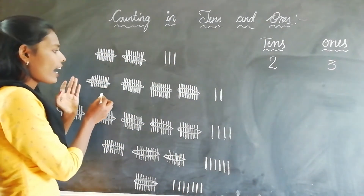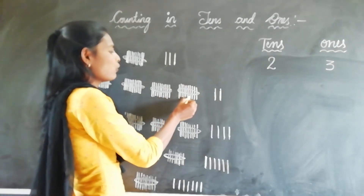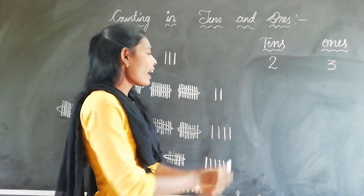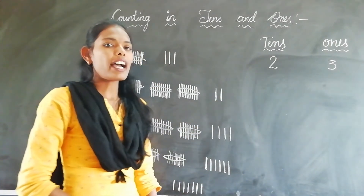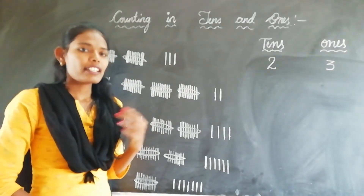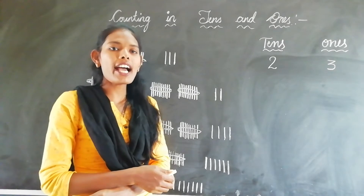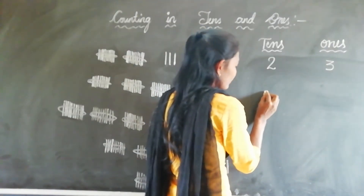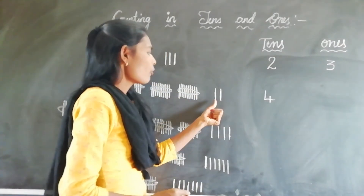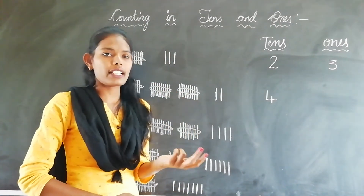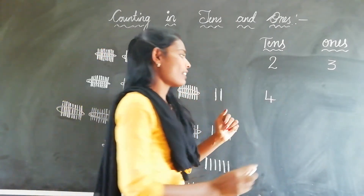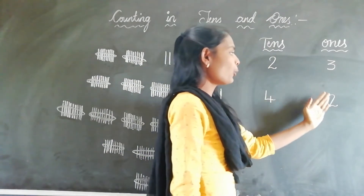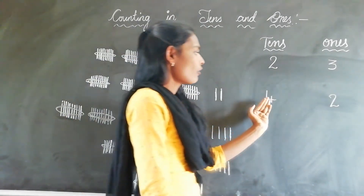Here I have 4 bundles of 10 sticks and 2 loose sticks. Tell me students — how many tens and how many ones do we have? Here we have 4 tens and 2 ones. So the number is 42.